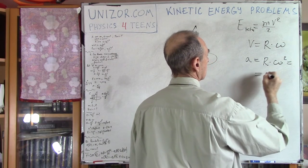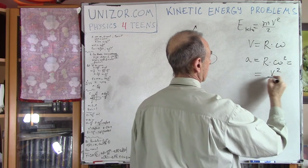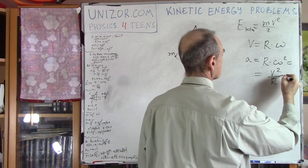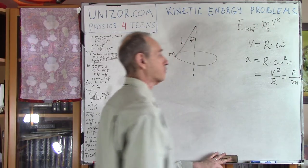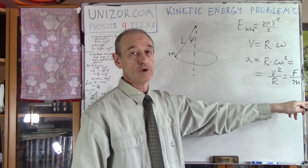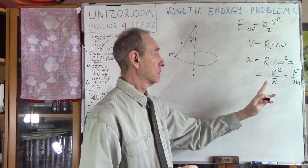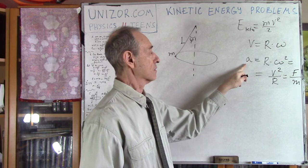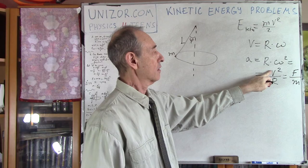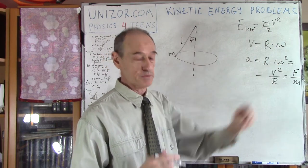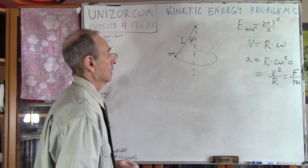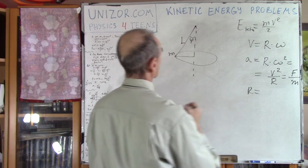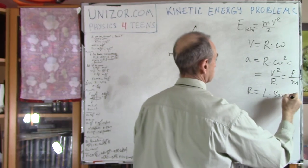The radius r is simple: r = l·sin(φ). The centripetal force is slightly more involved. The gravity force is m·g downward. The tension of the thread can be decomposed into two components: one vertical, equal and opposite to gravity, and one horizontal, which is the centripetal force.